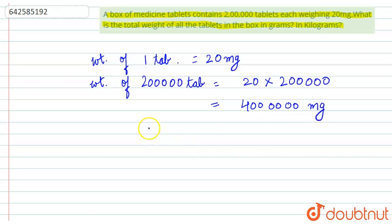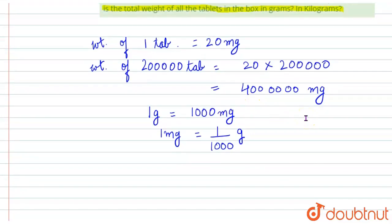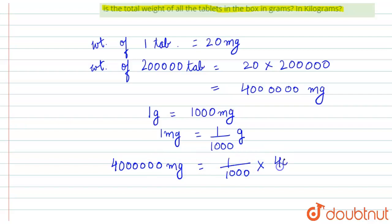We know that one gram is equal to 1000 milligrams, or we can say one milligram is equal to one over one thousand grams. So 40 lakh milligrams is equal to one over one thousand into 40 lakh, which is equal to four thousand grams.